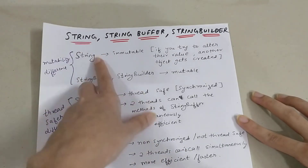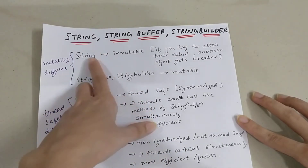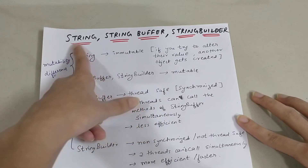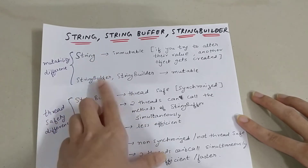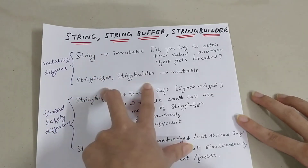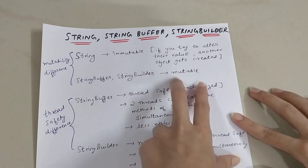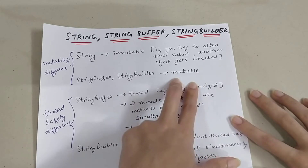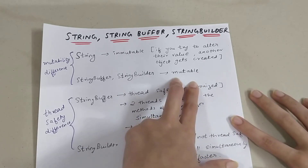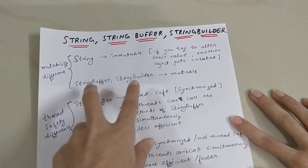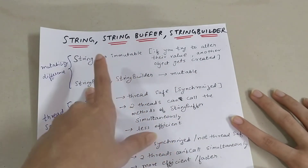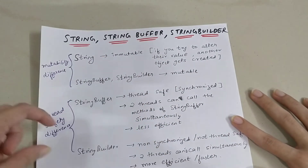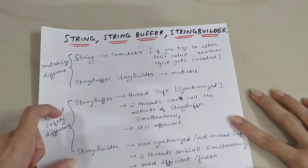In the case of StringBuffer and StringBuilder, you can change the values of that particular string — you can append values, change anything, and perform a lot of functions on it. So the key difference between String and StringBuffer or StringBuilder is basically the mutability difference. String is immutable; StringBuffer and StringBuilder are both mutable.